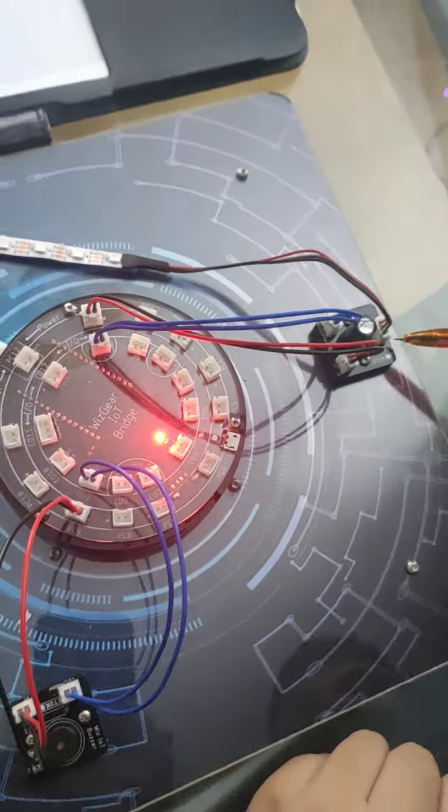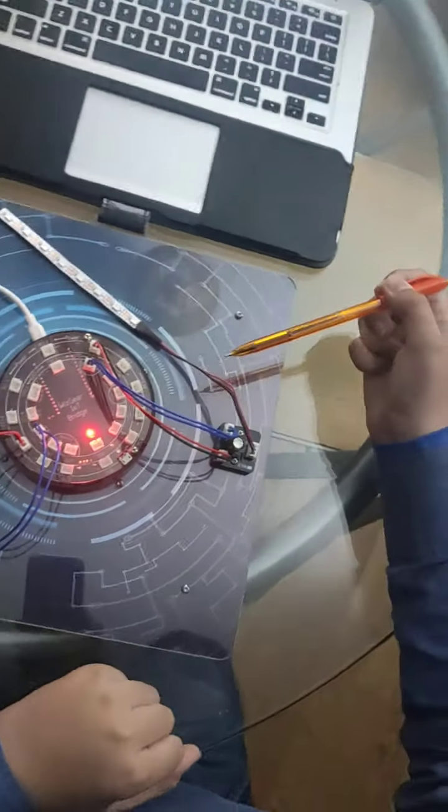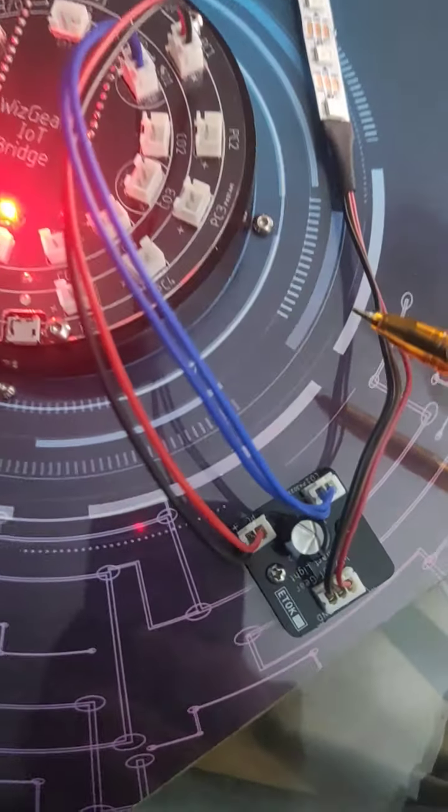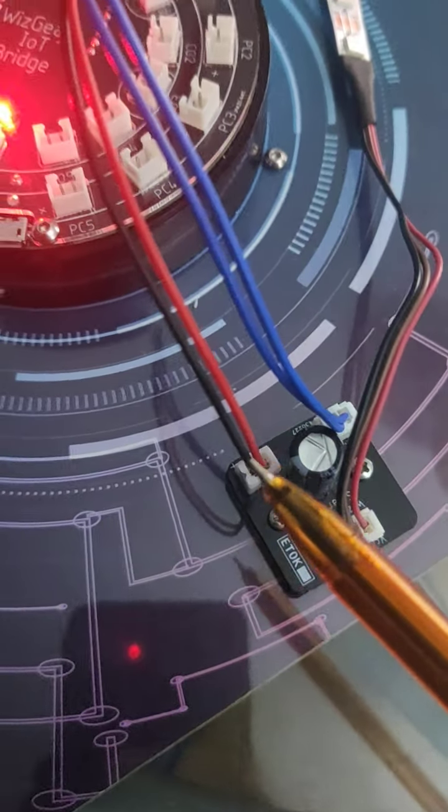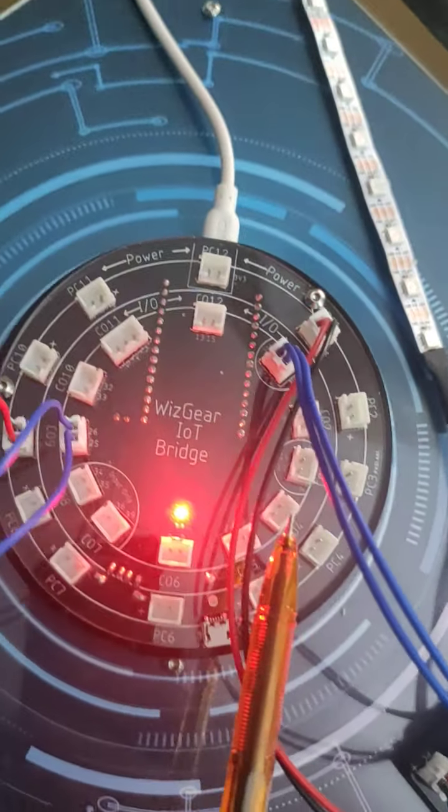And for our smart light, we have the smart light module and we have our smart light RGB addressable strip. So, first we take our PC and connect it all the way to PC1 on the IoT bridge.